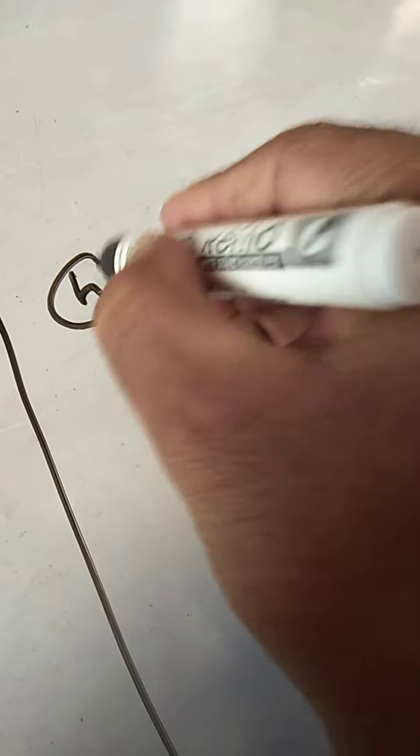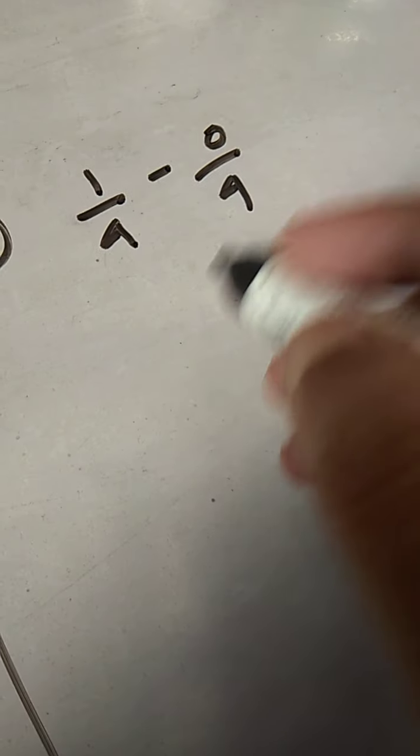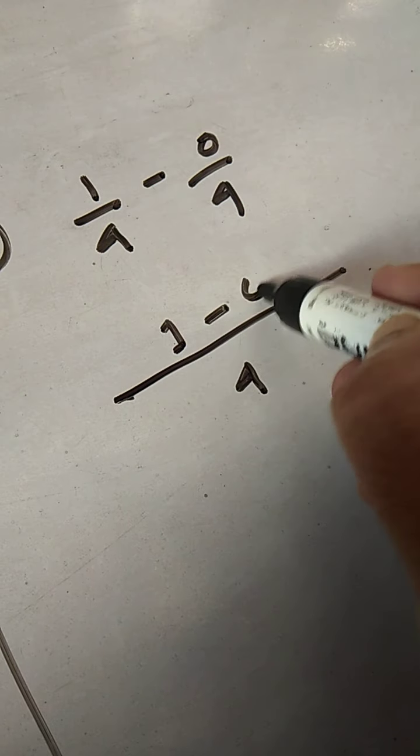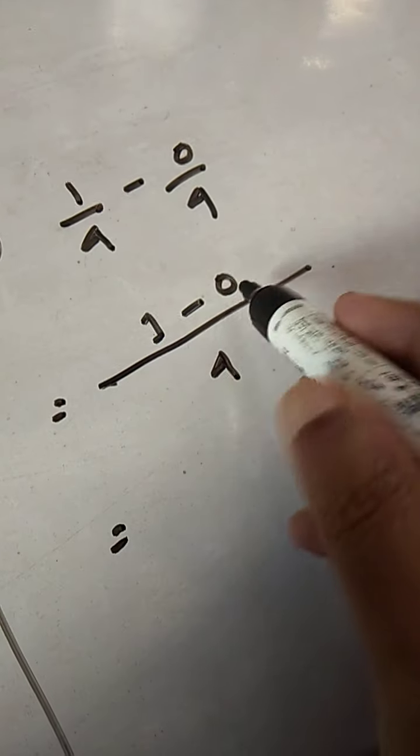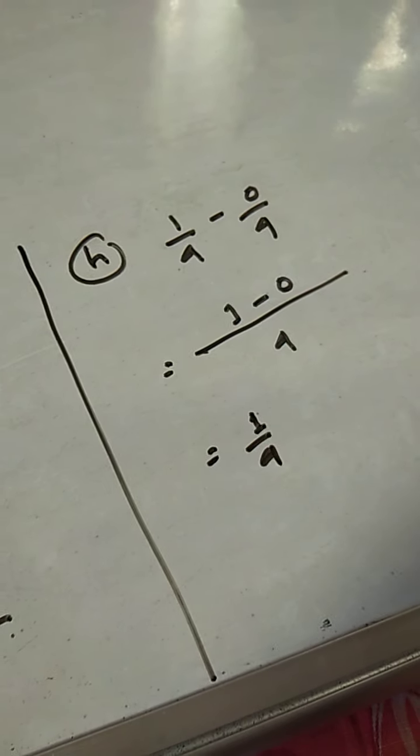Let us move on to sum number H. 1 upon 4 minus 0 upon 4. These two fractions are again carrying the same denominator. So, make a common denominator 4. 1 minus 0. 1 minus 0 is what? 1 by 4. So, this is the answer, 1 by 4.